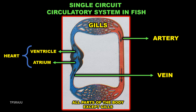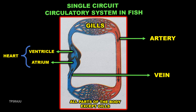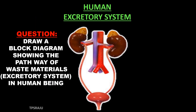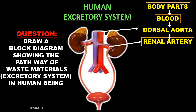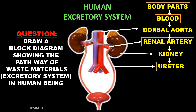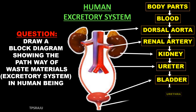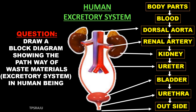This is the single circuit circulatory system in fish. The pathway of waste materials is: body parts, blood, dorsal aorta, renal artery, kidney, ureter, bladder, urethra and outside.